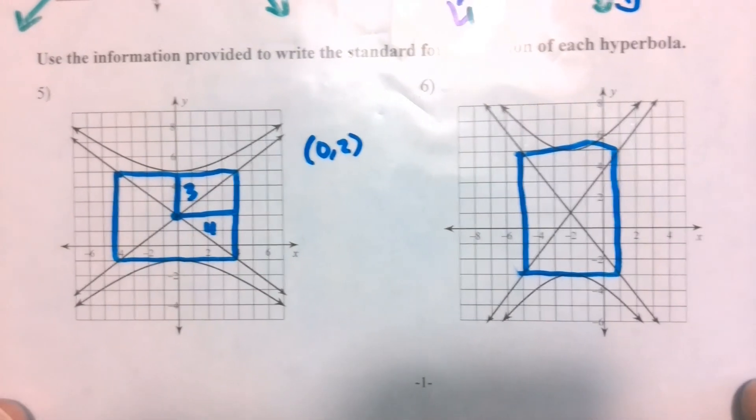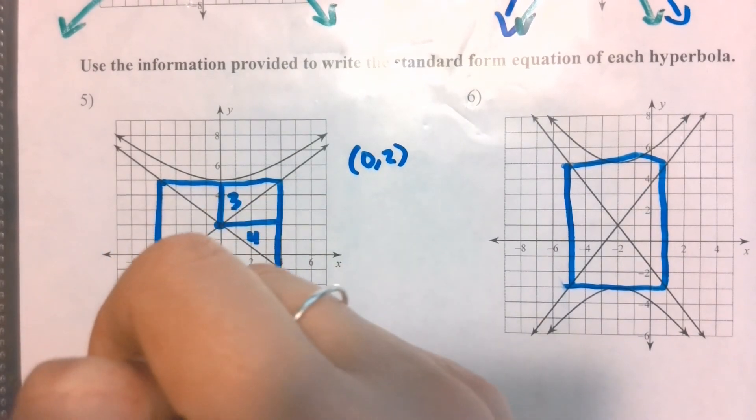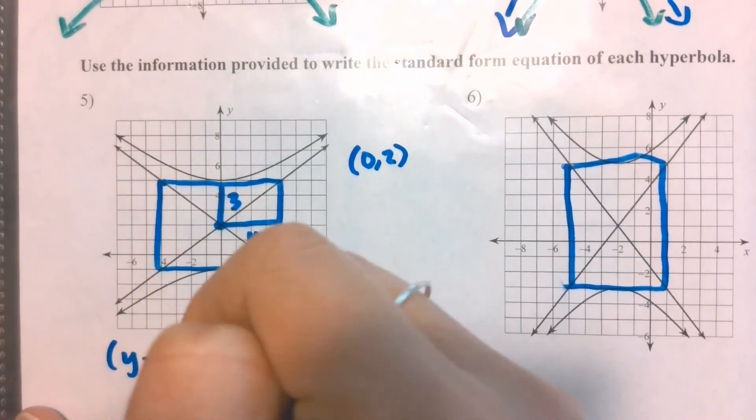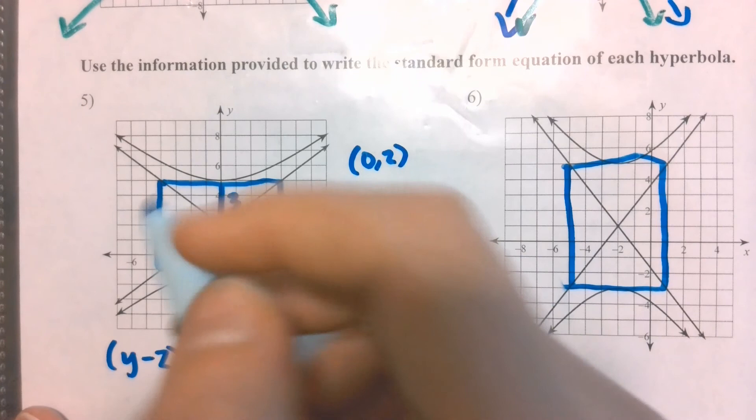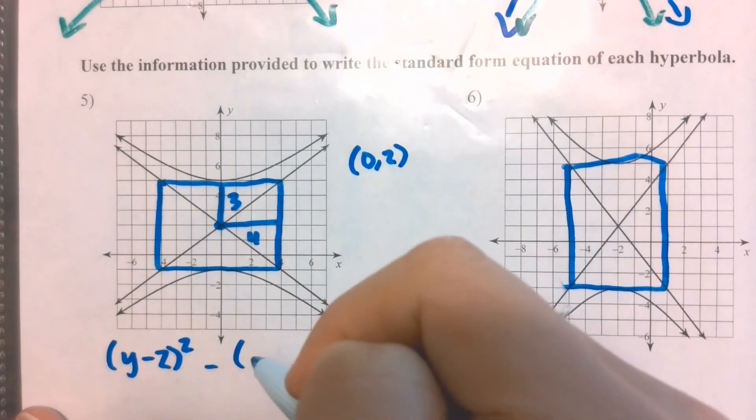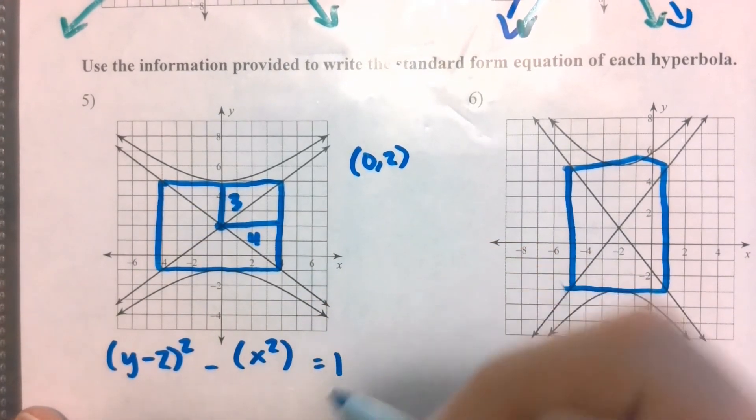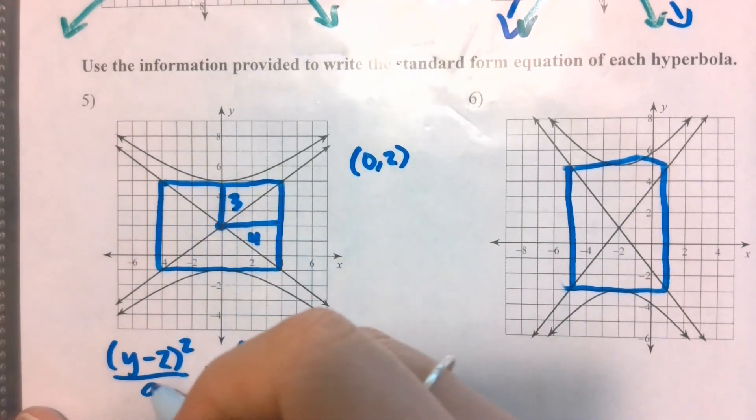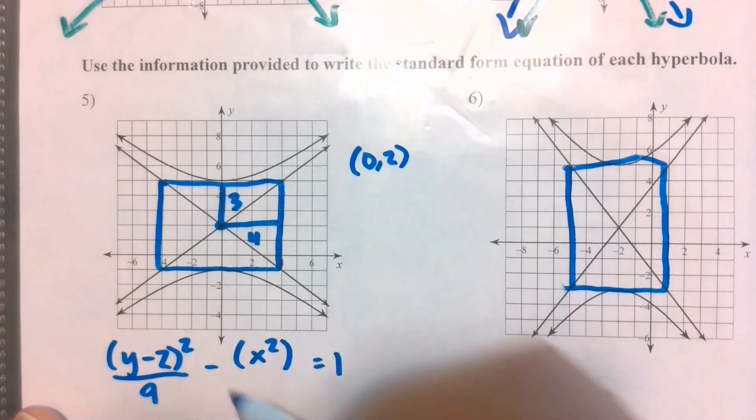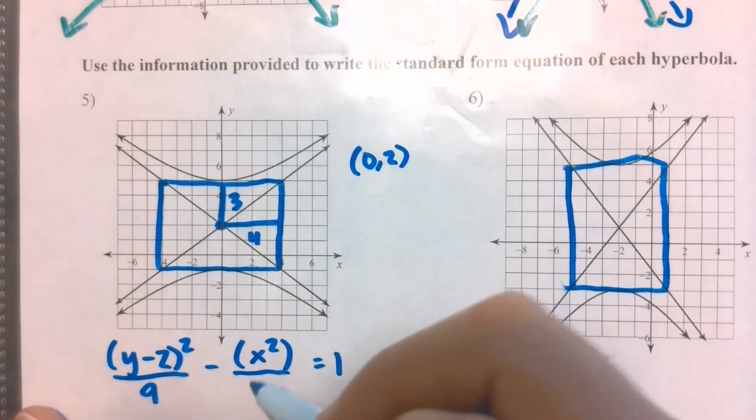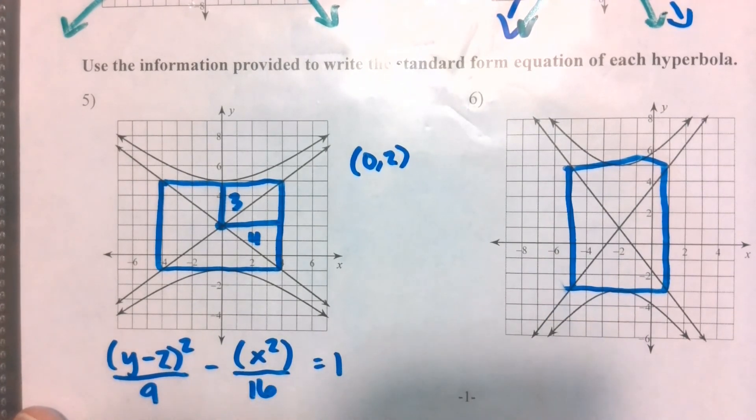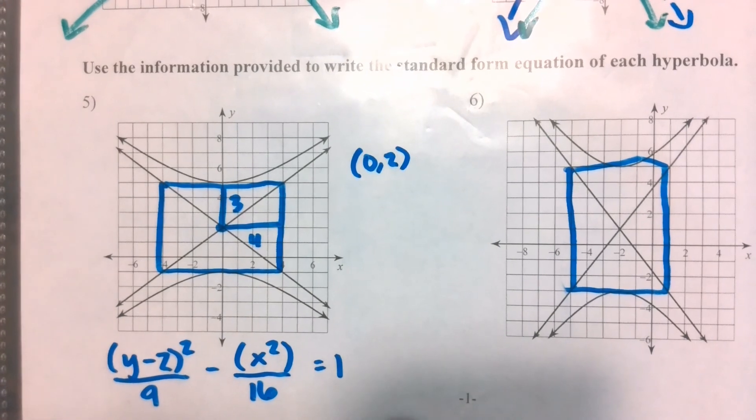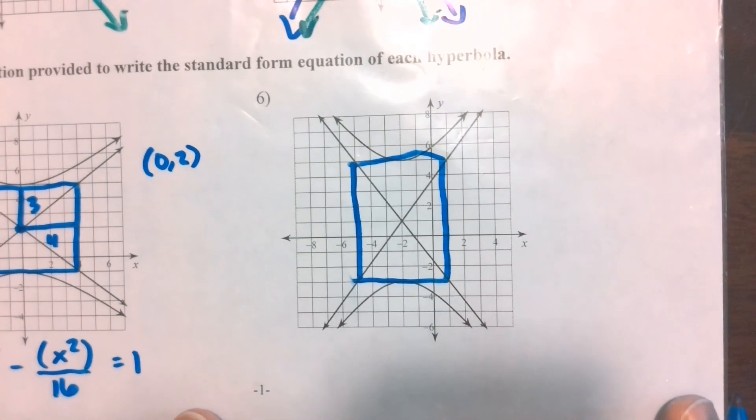So because this is a vertical hyperbola, I want to make sure that the y term is first. So I'll have (y - 2), because that was the y value, minus our (x - 0), so x squared is fine, equals one. And then I still want to have that vertical distance squared underneath the y, the horizontal distance squared underneath the x.